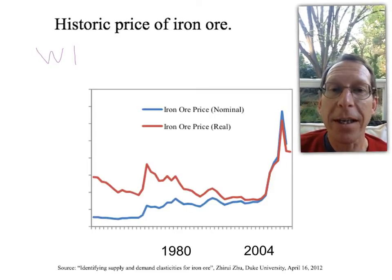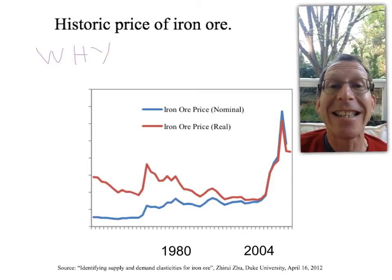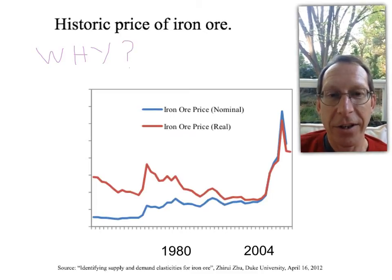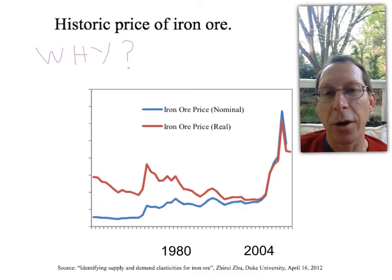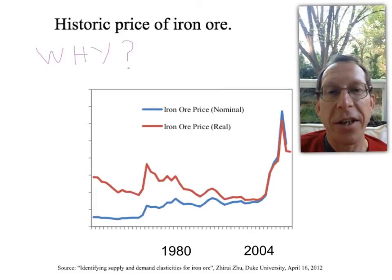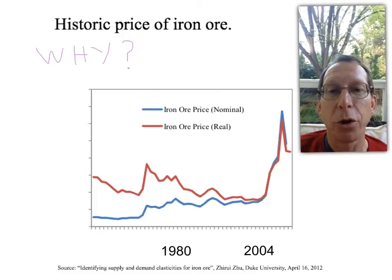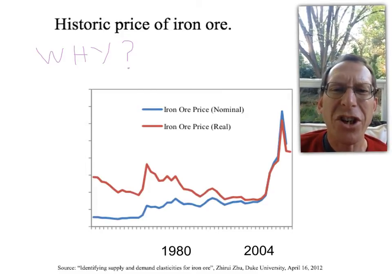When the price is dropping, why are they keeping on producing so much iron ore? Well actually, the perfectly competitive market model predicts exactly this cycle that we've seen in iron ore in Australia. And we've seen repeated many times in booms around the world. Let me show you how.